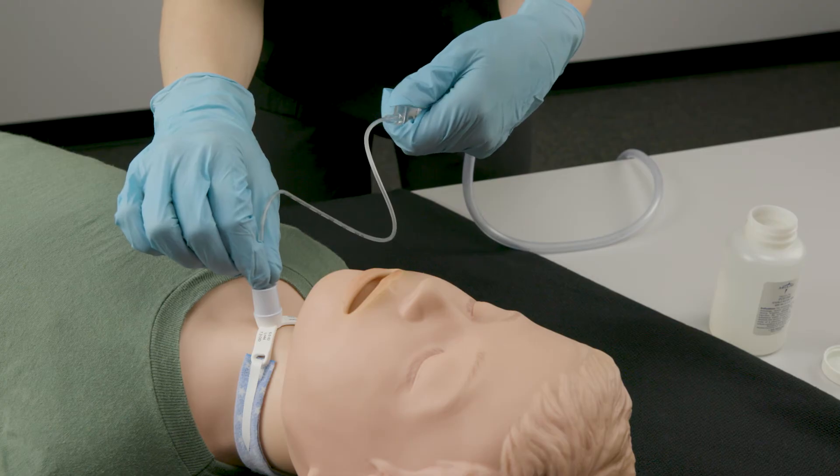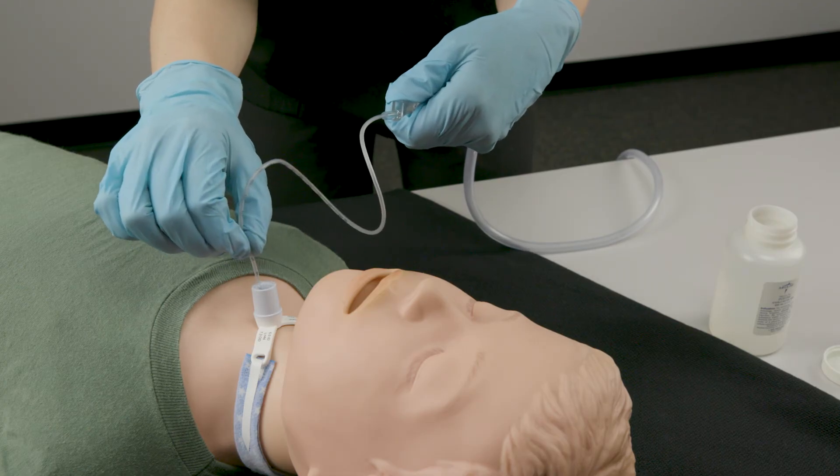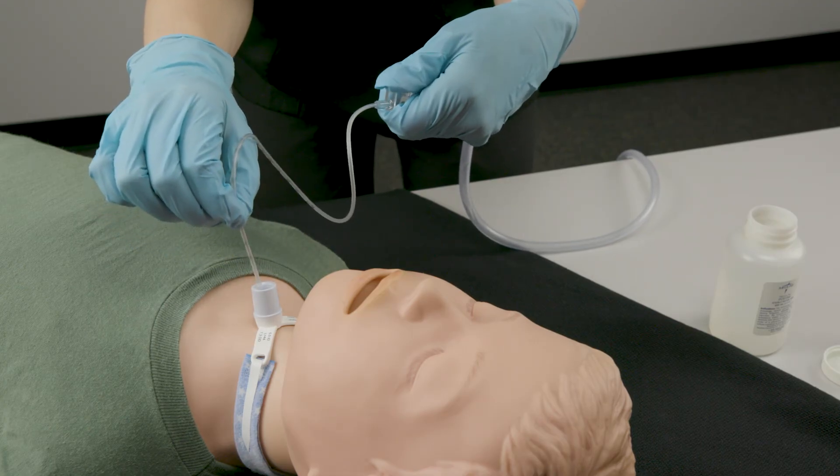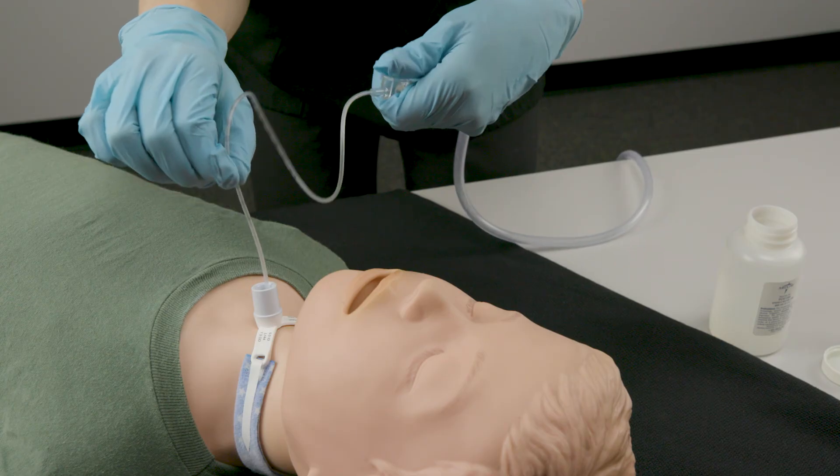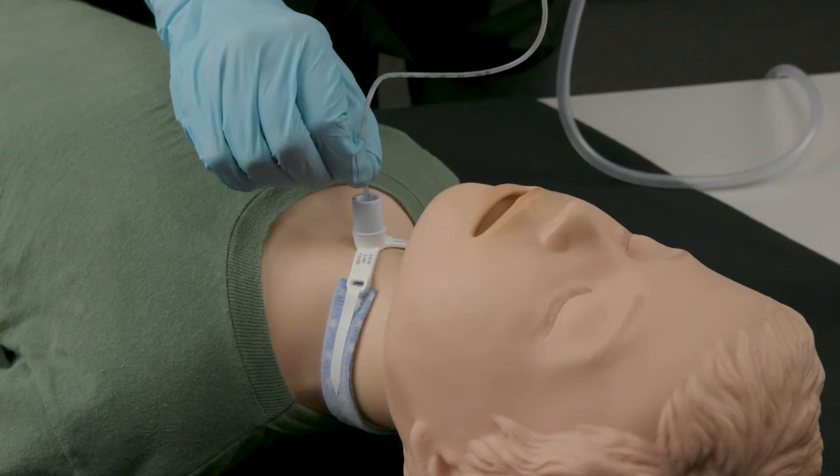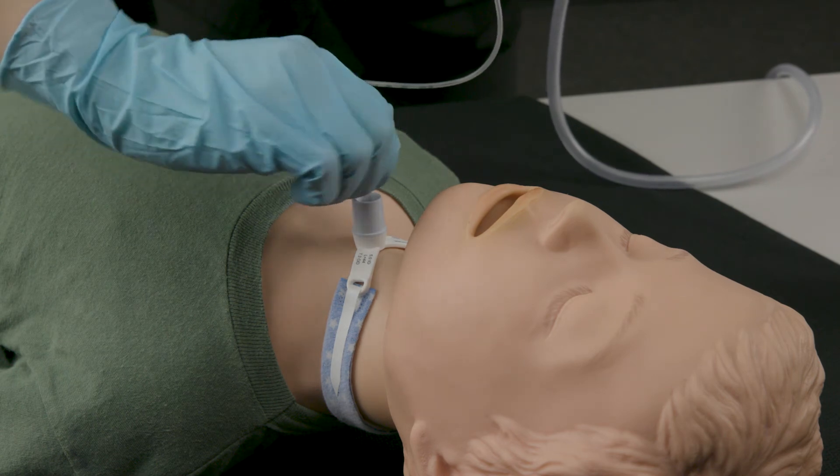Roll the catheter between your thumb and index finger as you slowly pull the catheter out of the trach tube. This motion, similar to rolling a pencil between your fingers, helps remove secretions from the trach tube.